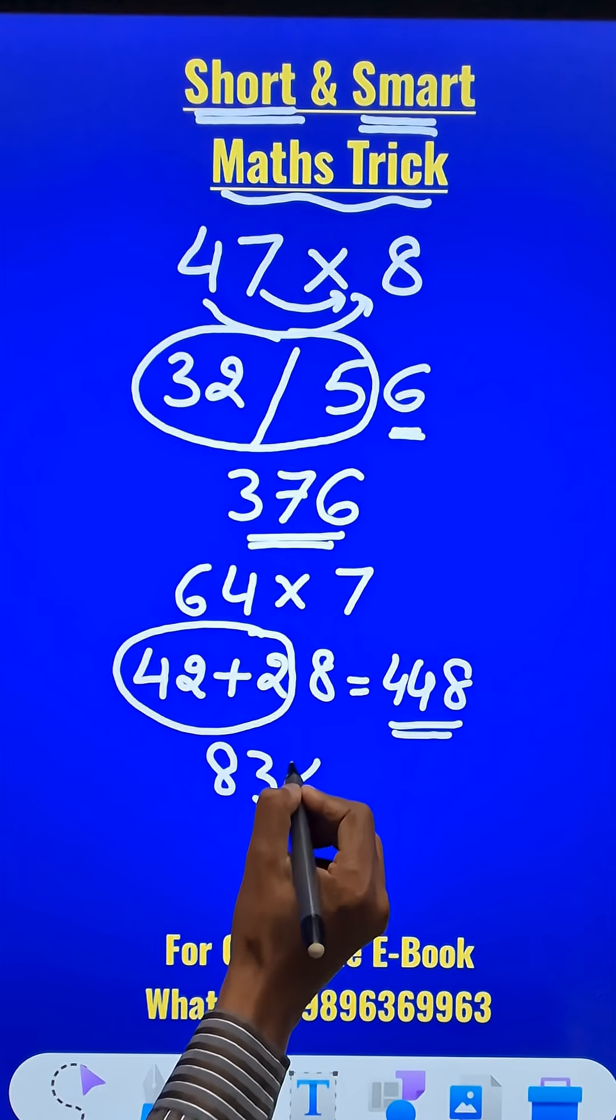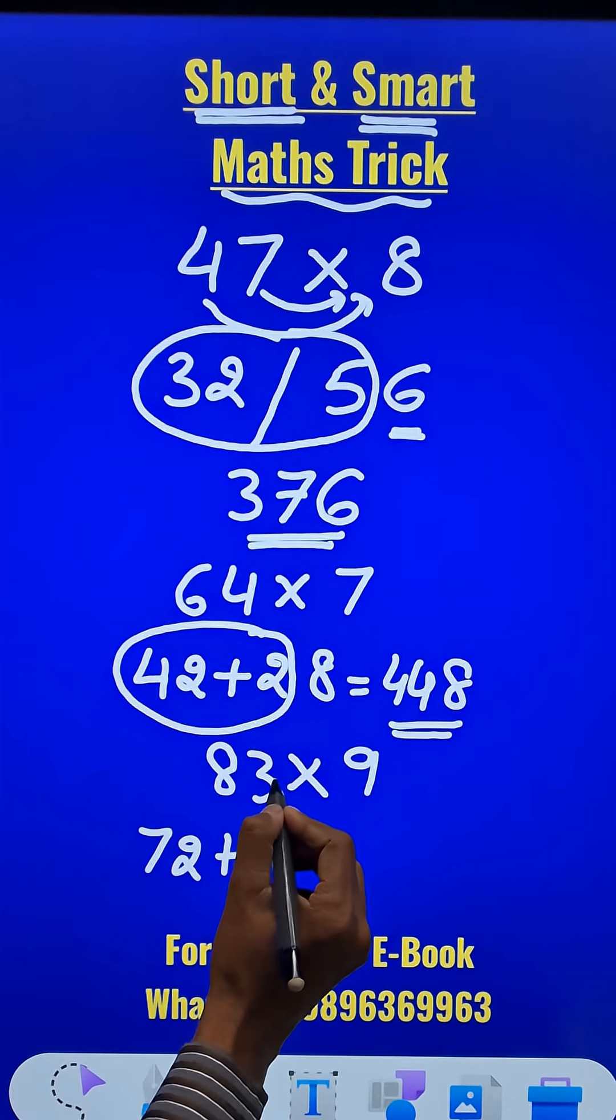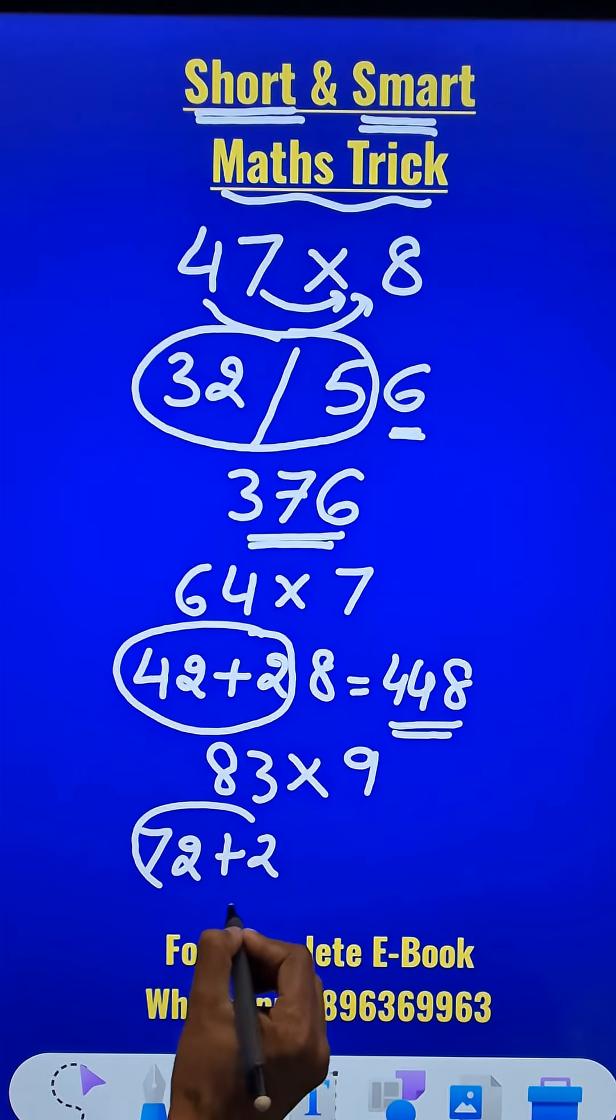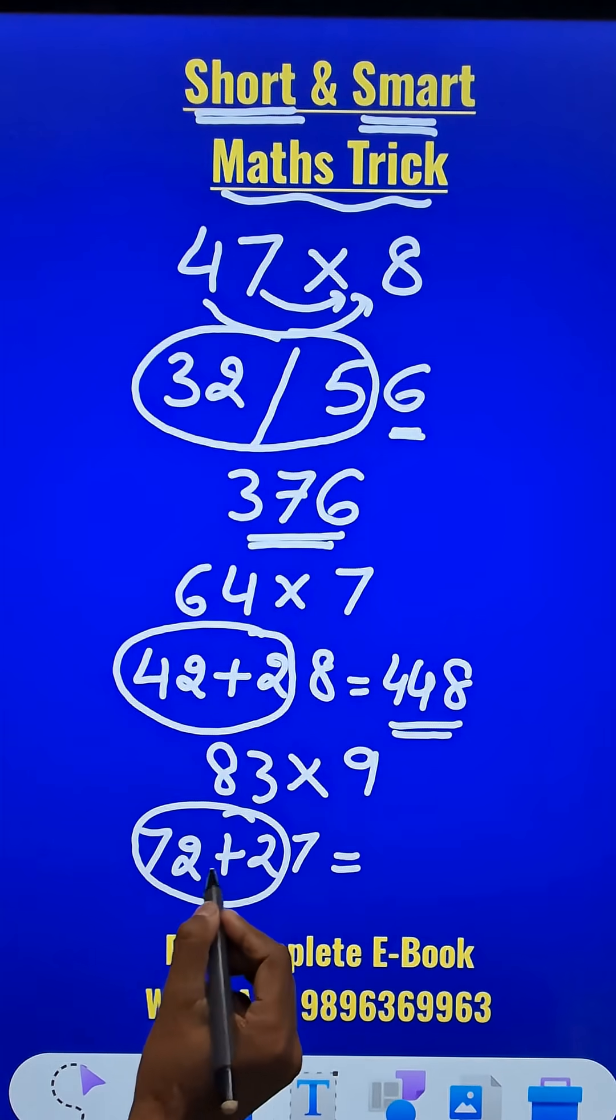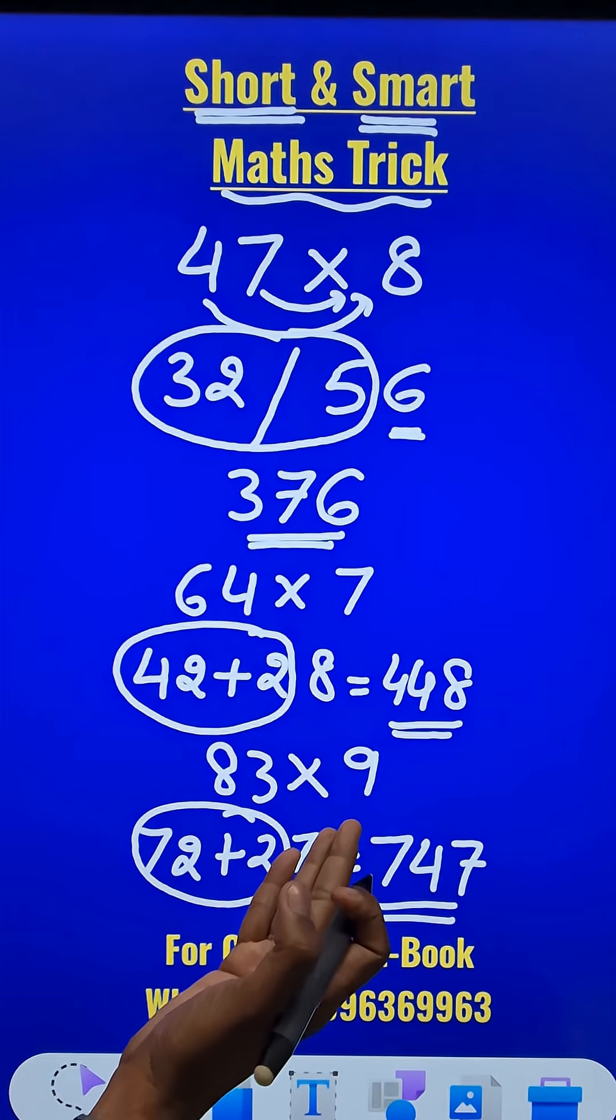Likewise 83 times 9. 8 times 9 is 72 and add what? 3 times 9 which is 27. So your answer for the question is 747. Isn't that an amazing trick to master the dodging tables?